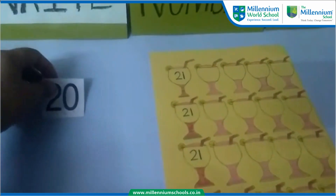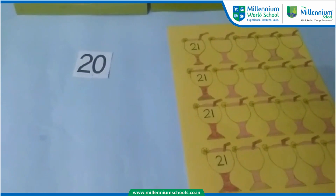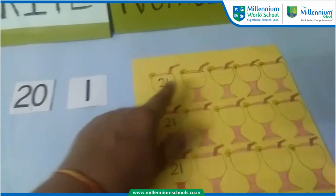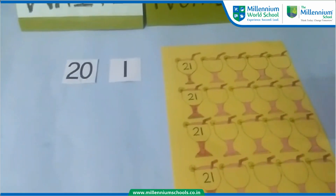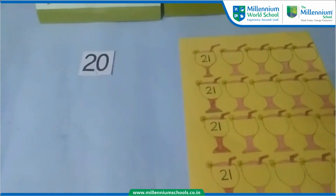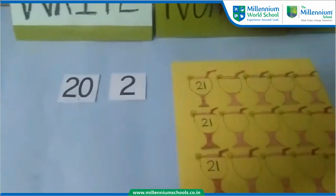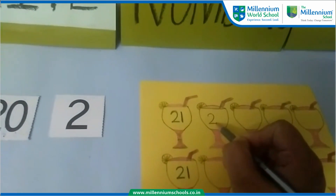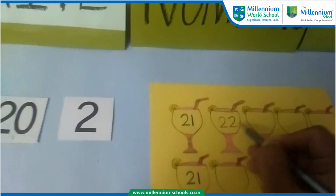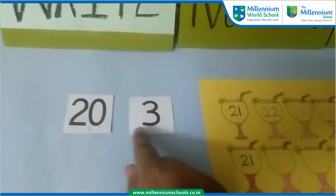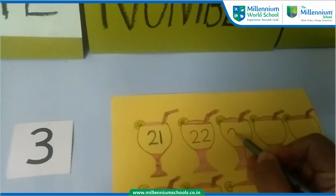So children, 20 and 1 is 21. So the next number will be? Think — 20 and 2. 20 and 2 will be 22. Very good. So now 20 and 3 makes 23.